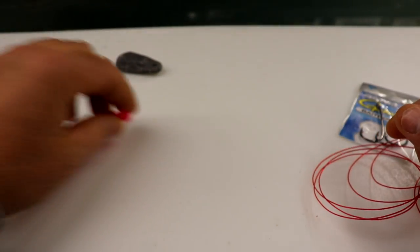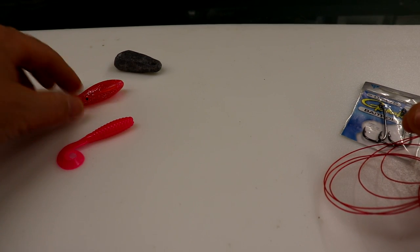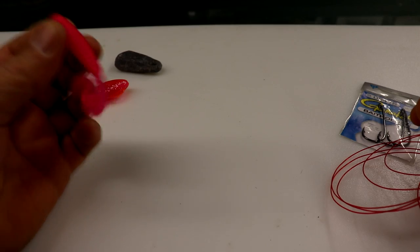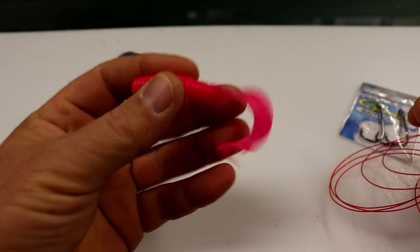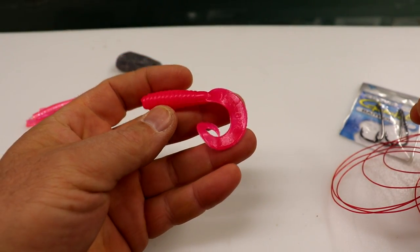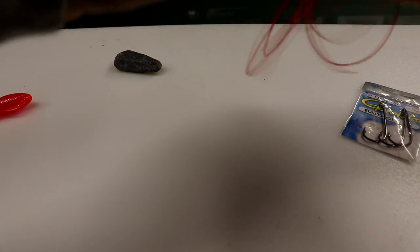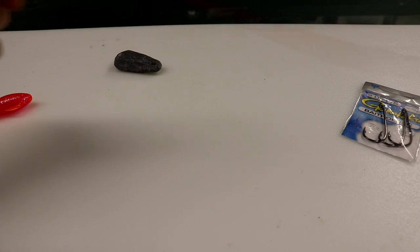And then we just have some little things that we would add on. This just happens to be a squid and a little twister tail in the bubblegum color. Codfish absolutely love this bubblegum color - it's probably one of the best colors you could use for codfish. So let's get to it.